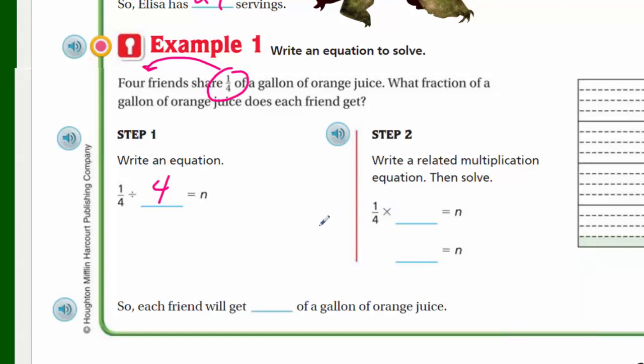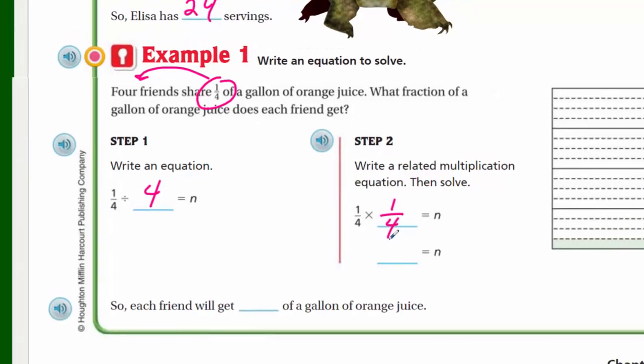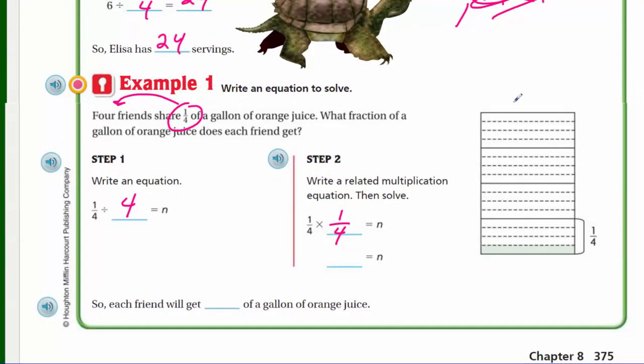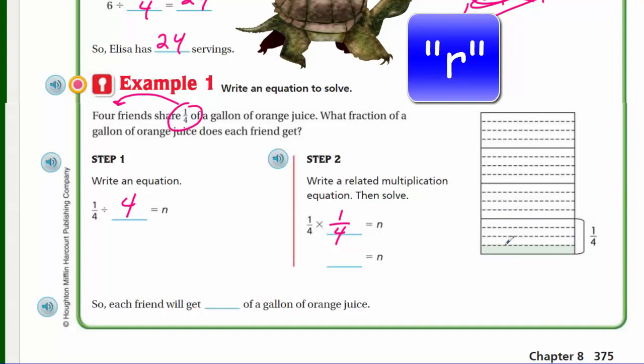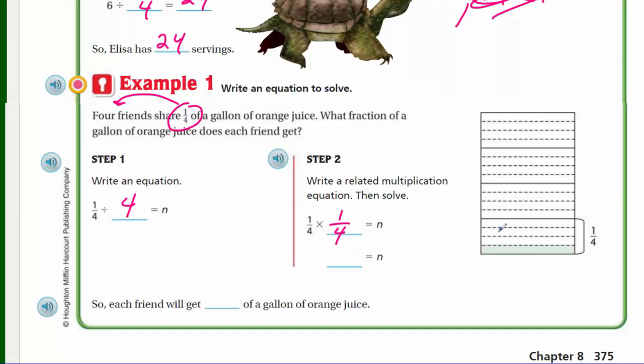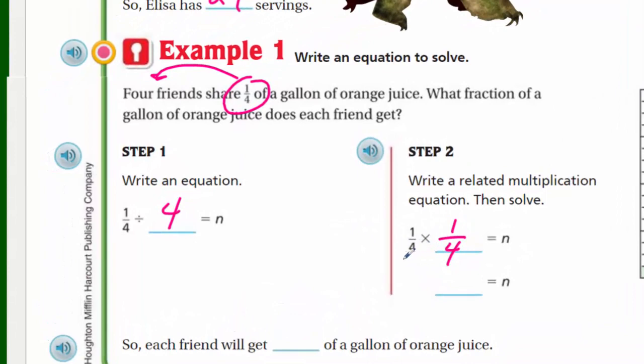Step two says write a related multiplication equation. So one quarter times, well, in this case, we already know, we don't know what n is. So if we put one quarter times, and again, we're going to go ahead and put one quarter. Well, we're writing one quarter times one quarter because we actually have, here shows the whole, like the whole gallon. Okay, the whole gallon of orange juice. Now here we have the one quarter of the gallon, and of that one quarter of the gallon, they're going to share with four friends. So you see how we end up with a quarter of a quarter. And that's really what we have, and a quarter of a quarter means one fourth times one fourth. Or a quarter times one quarter, giving us one sixteenth because we just multiply the numerators together, then the denominators, and we get one sixteenth. So our variable n, which was our unknown, now equals one sixteenth. So each friend will get one sixteenth of a gallon of orange juice. Cool.